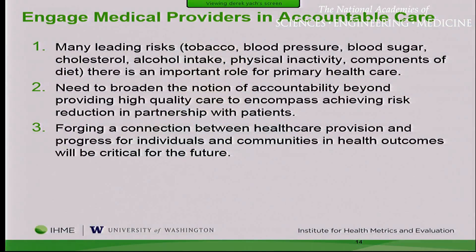Unless we in public health involve the medical system in our prevention, it's not going to work out. You hear our politicians say we have the best medical system in the world — true for those who can access it, as I gave you the story of Seattle. But for many people, they don't have access. We have to change the way we look at the medical system. A hospital shouldn't only be judged by how it treats its patients — it should also be judged on how its community and catchment area is doing in terms of prevention.